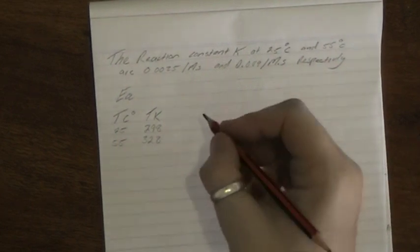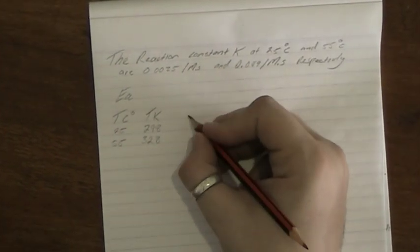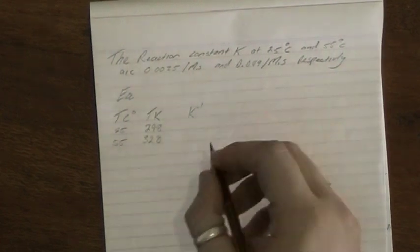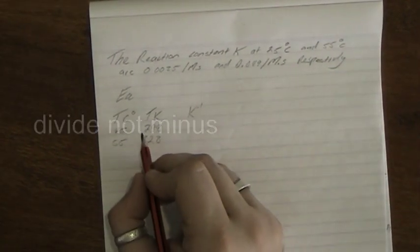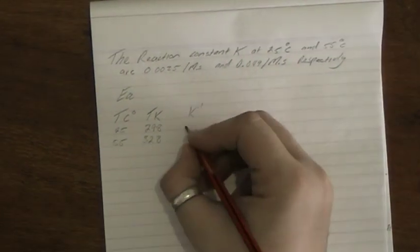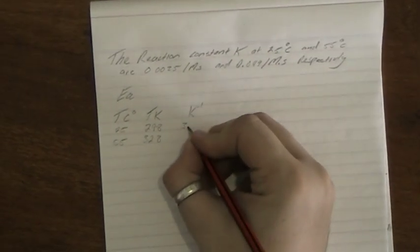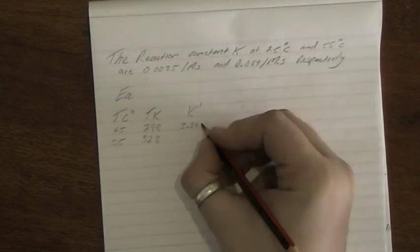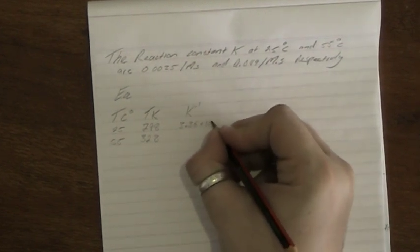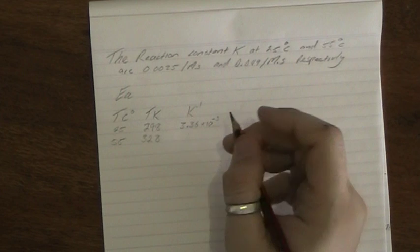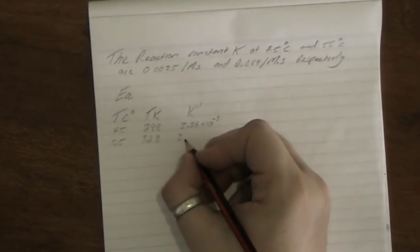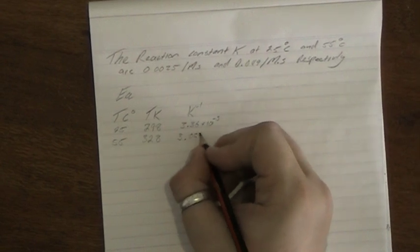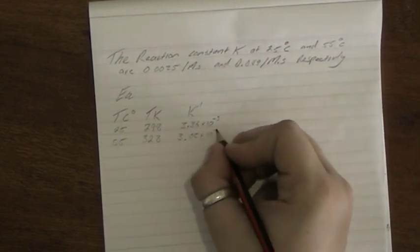Now we need to know what the reciprocal temperature is, K minus 1. To calculate that you go 1 divided by 298, which is 3.36 times 10 to the power of negative 3. And then for 328 is 3.05 times 10 to the negative 3.